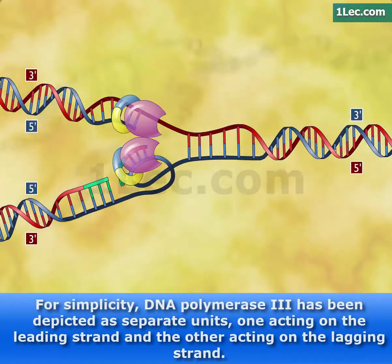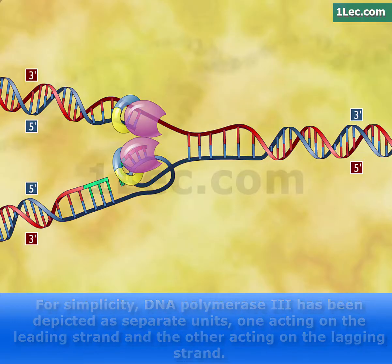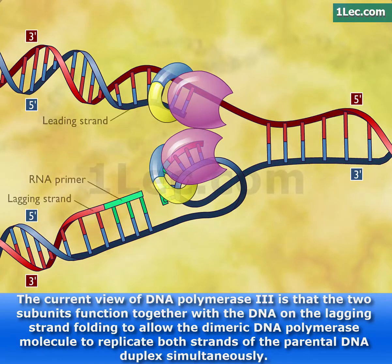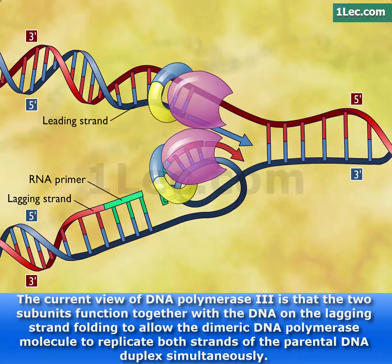For simplicity, DNA polymerase 3 has been depicted as separate units, one acting on the leading strand and the other acting on the lagging strand. The current view of DNA polymerase 3 is that the two subunits function together with the DNA on the lagging strand, folding to allow the dimeric DNA polymerase molecule to replicate both strands of the parental DNA duplex simultaneously.